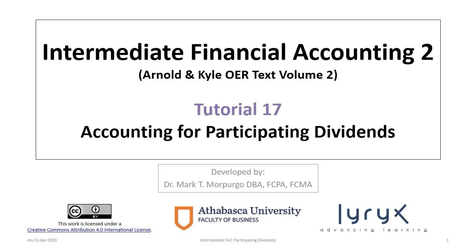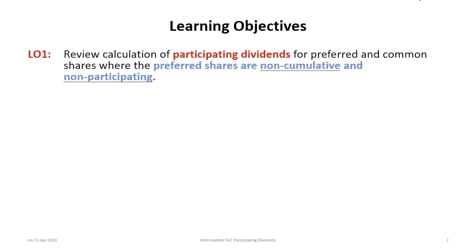Hello and welcome to Intermediate Financial Accounting Tutorial 17. This tutorial will review accounting for participating dividends. The tutorial has four main learning objectives. The first will be to review the calculation of participating dividends for preferred and common shares where the preferred shares are non-cumulative and non-participating.